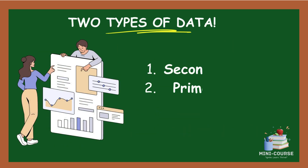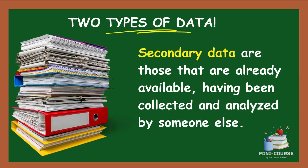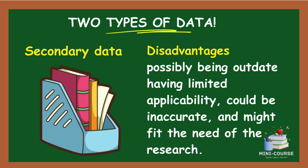There are two types of data: secondary data and primary data. Secondary data are those that are already available, having been collected and analyzed by someone else. Secondary data have the advantages of low cost in gathering, easier to obtain, and can be obtained in less time. They have the disadvantages of possibly being outdated, having limited applicability, could be inaccurate, and might not fit the need of the research.